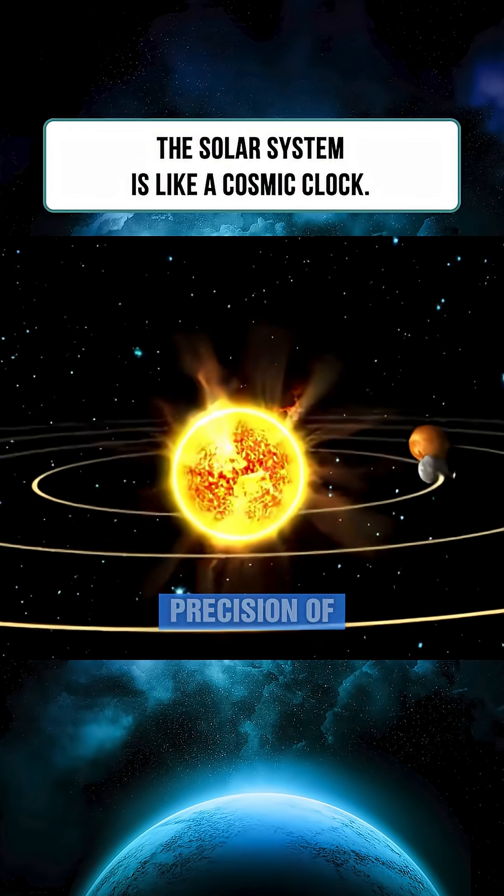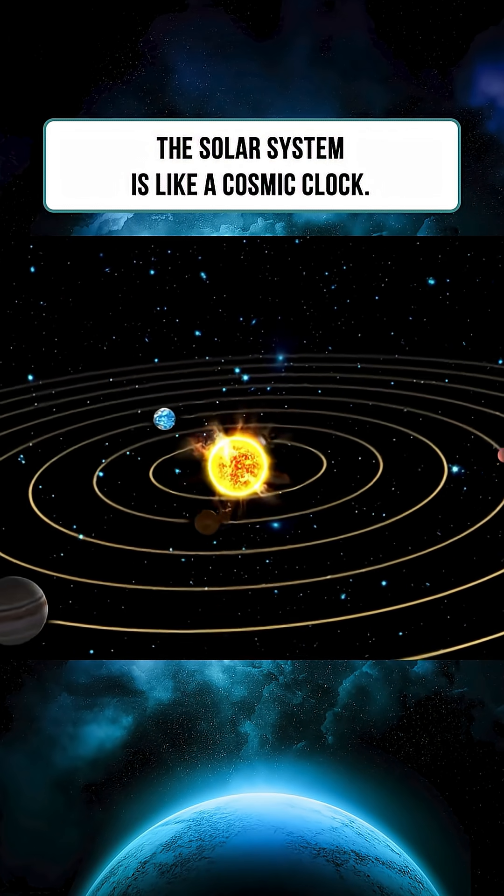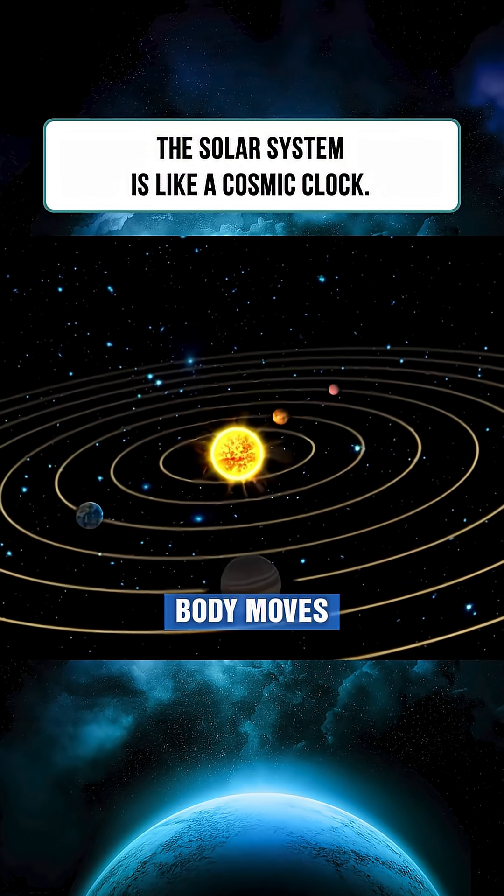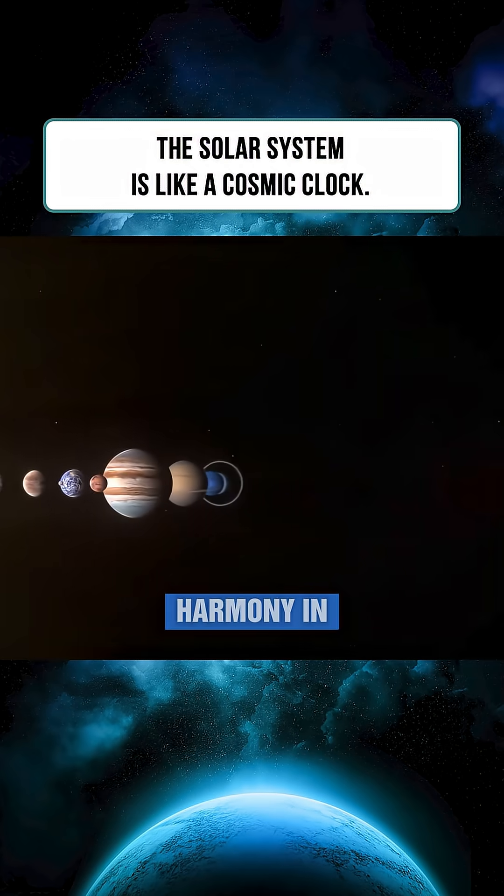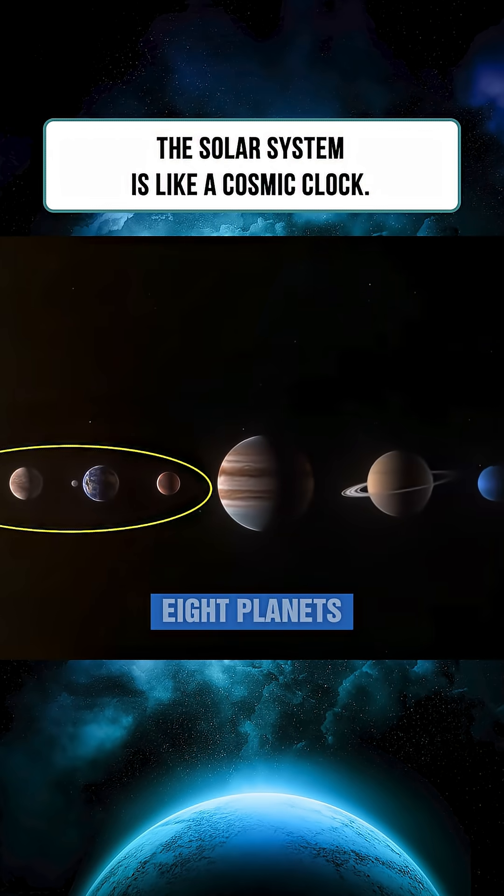Our solar system operates with the precision of a mechanical watch. Every celestial body moves along its orbit in stable harmony. In total, the solar system hosts eight planets.